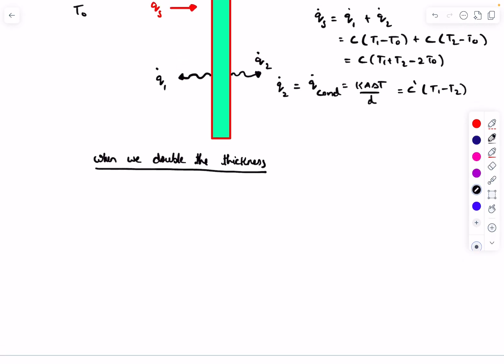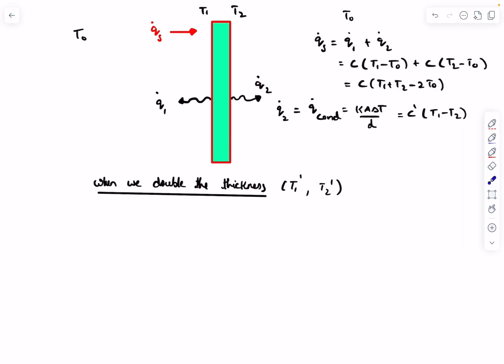Now what we're going to do is double the thickness. In this situation, I'm going to take the temperatures as T1 dash and T2 dash. Not much is going to change, the heat flux coming from the sun is going to be still the same. Everything C and T naught is also going to be the same. The only thing that is varying is these two terms.